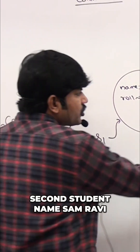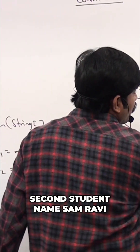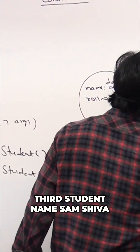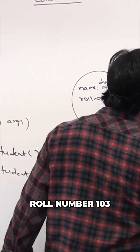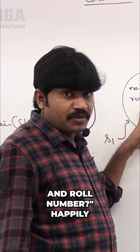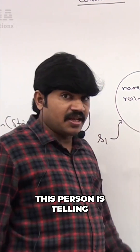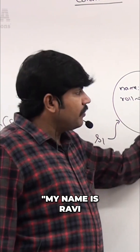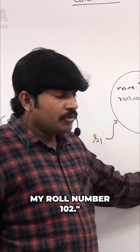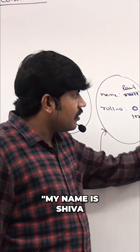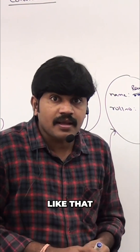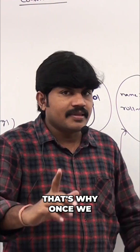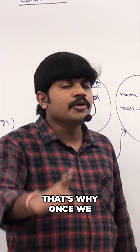For example: first student name Durga, roll number 101; second student name Ravi, roll number 102; third student name Shiva, roll number 103. Now when you ask each student their name and roll number, happily they respond — my name is Durga, roll number 101; my name is Ravi, roll number 102; my name is Shiva, roll number 103. Now these objects are in a position to respond properly.